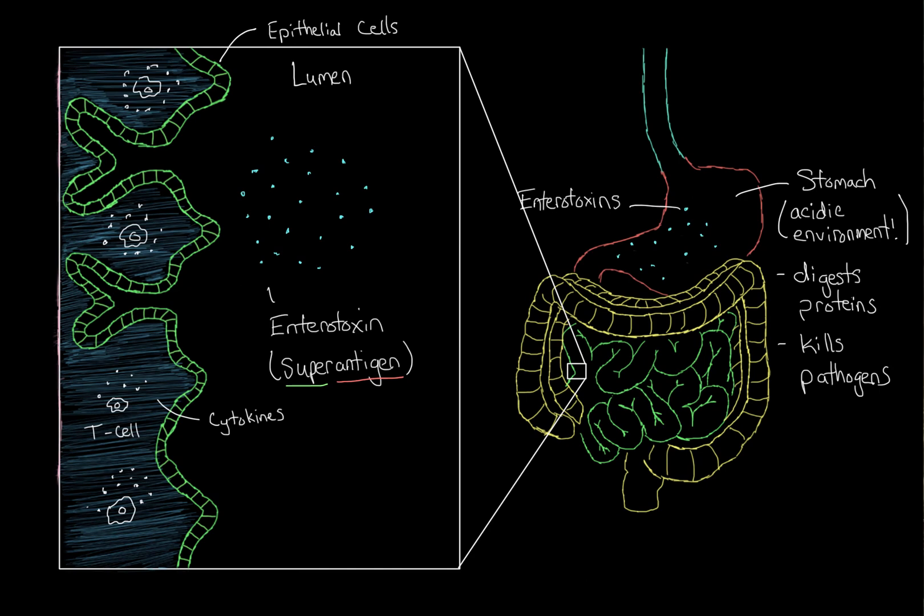These cytokines can then go on to do a bunch of different things. One, they can actually prevent a lot of these epithelial cells from doing their job. That is, they prevent them from absorbing all that food and water. So all that stuff that you ate and drank will just pass through as diarrhea.